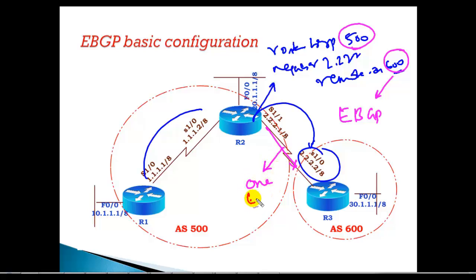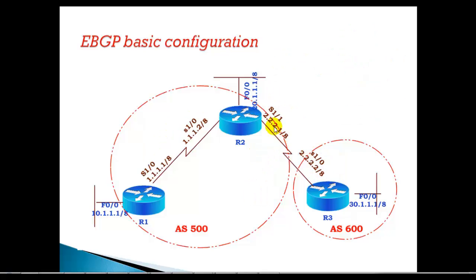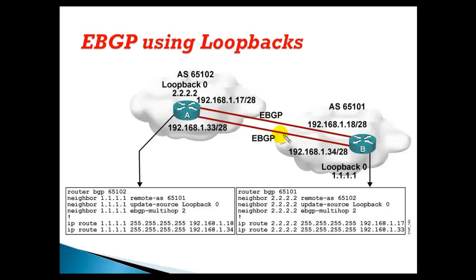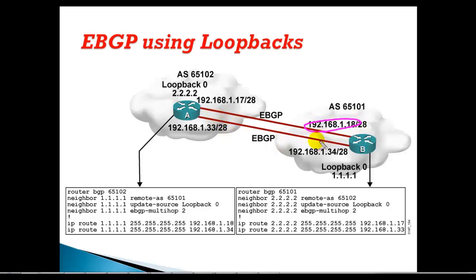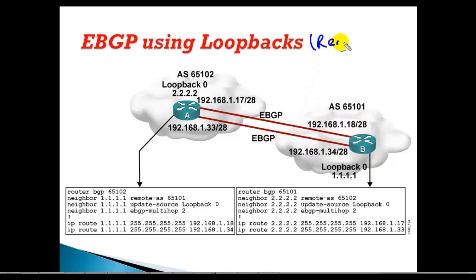That basic configuration works when you have only one exit path. But when you have multiple exit paths between two routers, using a physical interface is problematic because physical interfaces can go down anytime. You also cannot configure two BGP neighbors from the same router for the same peer. Instead, to provide redundancy, we use loopback interfaces.